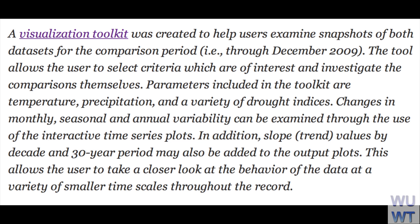A visualization toolkit was created to help users examine snapshots of both data sets for the comparison period, i.e., through December 2009. The tool allows the user to select criteria of interest and investigate the comparisons themselves. Parameters included in the toolkit are temperature, precipitation, and a variety of drought indices. Changes in monthly, seasonal, and annual variability can be examined through interactive time series plots. In addition, slope or trend values by decade and 30-year period may also be added to the output plots, allowing the user to take a closer look at the behavior of the data at a variety of smaller timescales throughout the record.